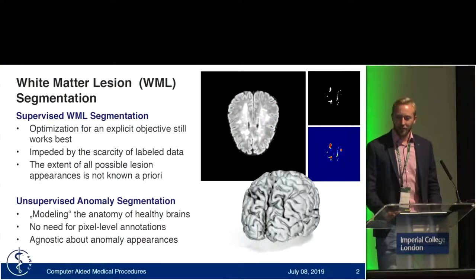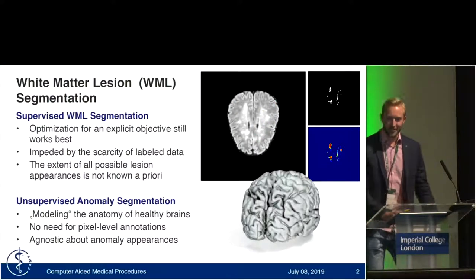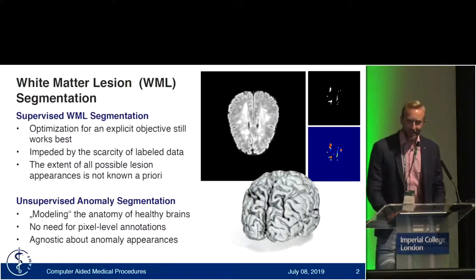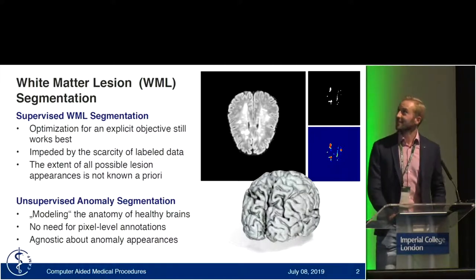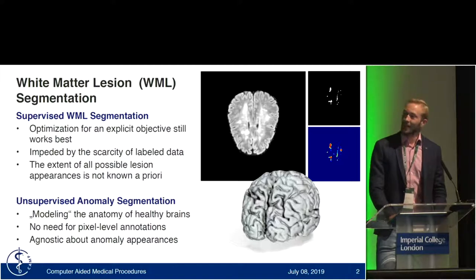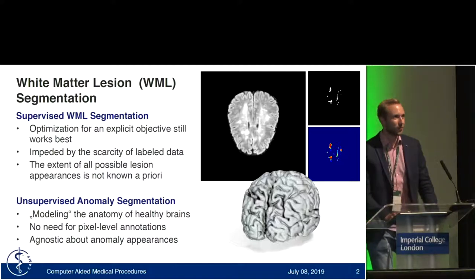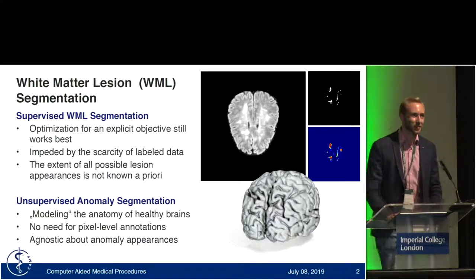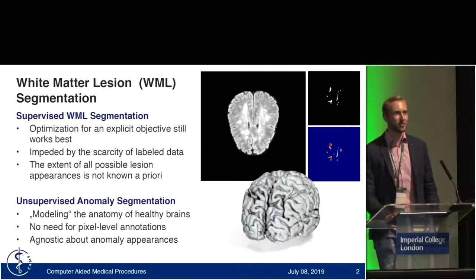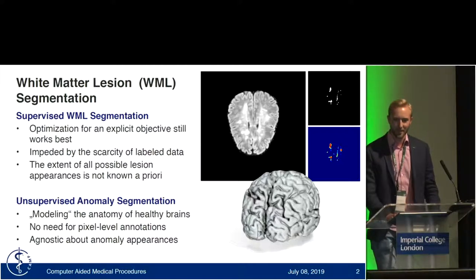We have seen a lot of MR images today. Here is another one. White matter lesions are these very bright spots that you can see on the right-hand side of the slide, and they are important biomarkers for neurodegenerative diseases such as multiple sclerosis or Alzheimer's.